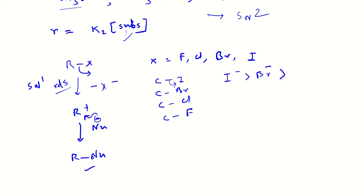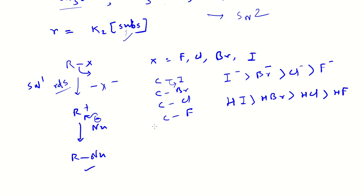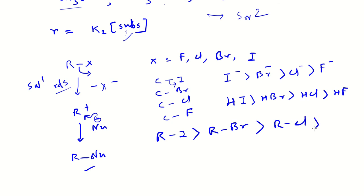The stability of leaving groups follows the order: I⁻ > Br⁻ > Cl⁻ > F⁻, which is also reflected in the acidity of their conjugate acids: HI > HBr > HCl > HF. Since removing I⁻ is most feasible, the overall rate of SN1 reaction follows: RI > RBr > RCl > RF. This is the effect of the leaving group on SN1 rate.